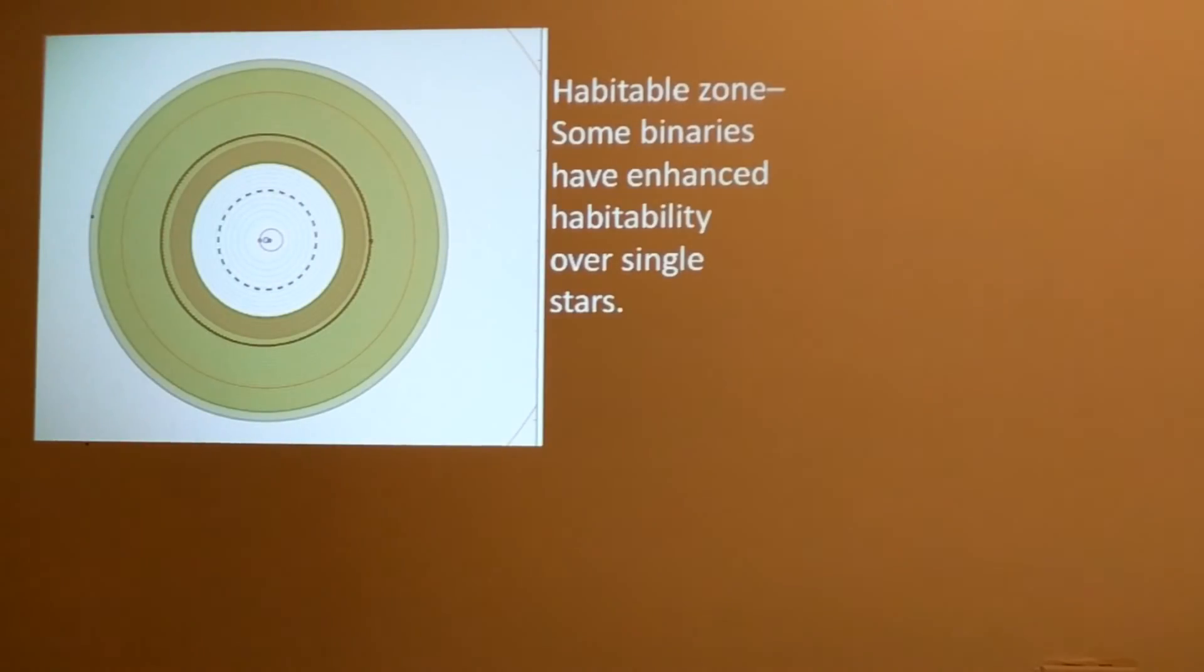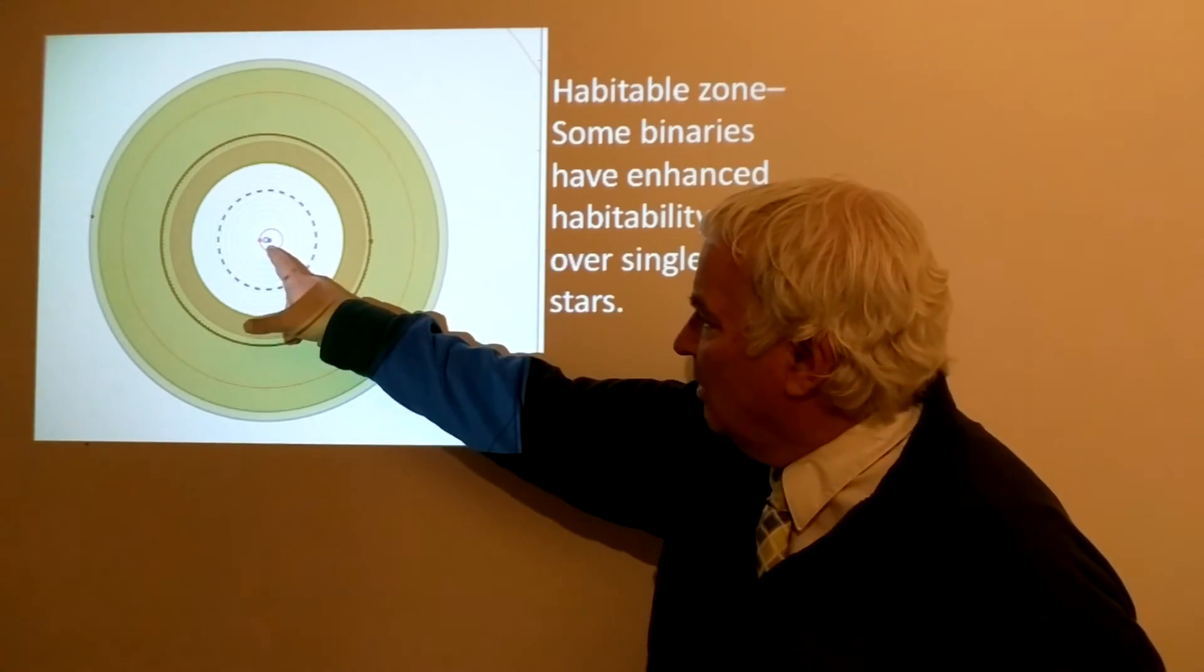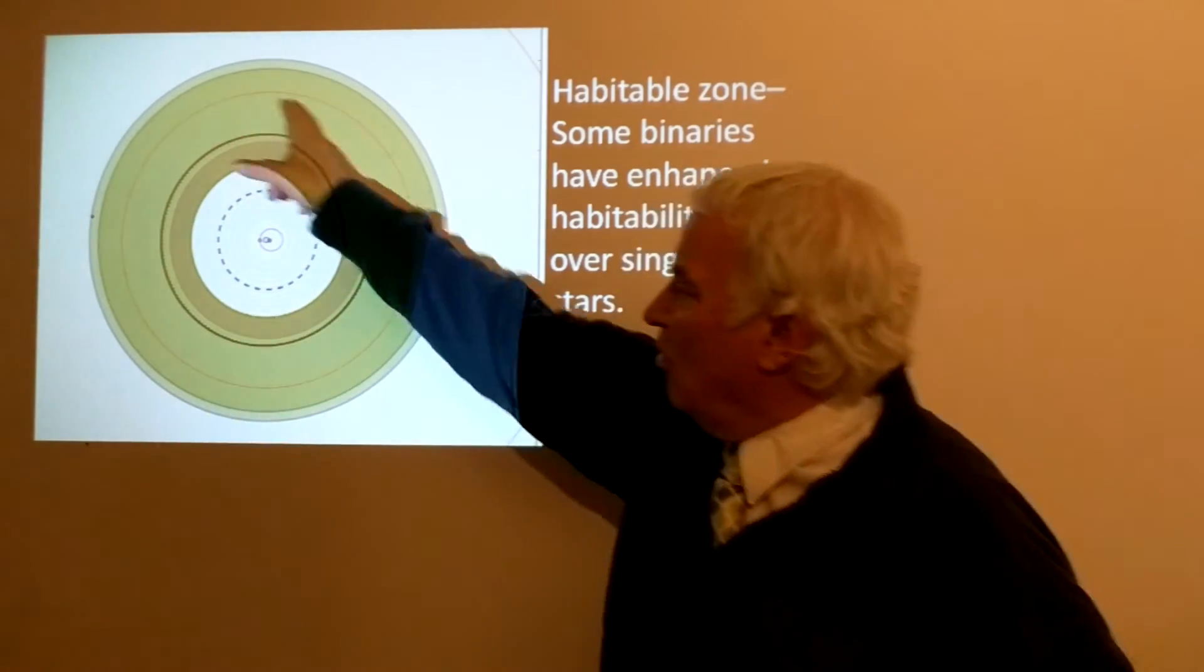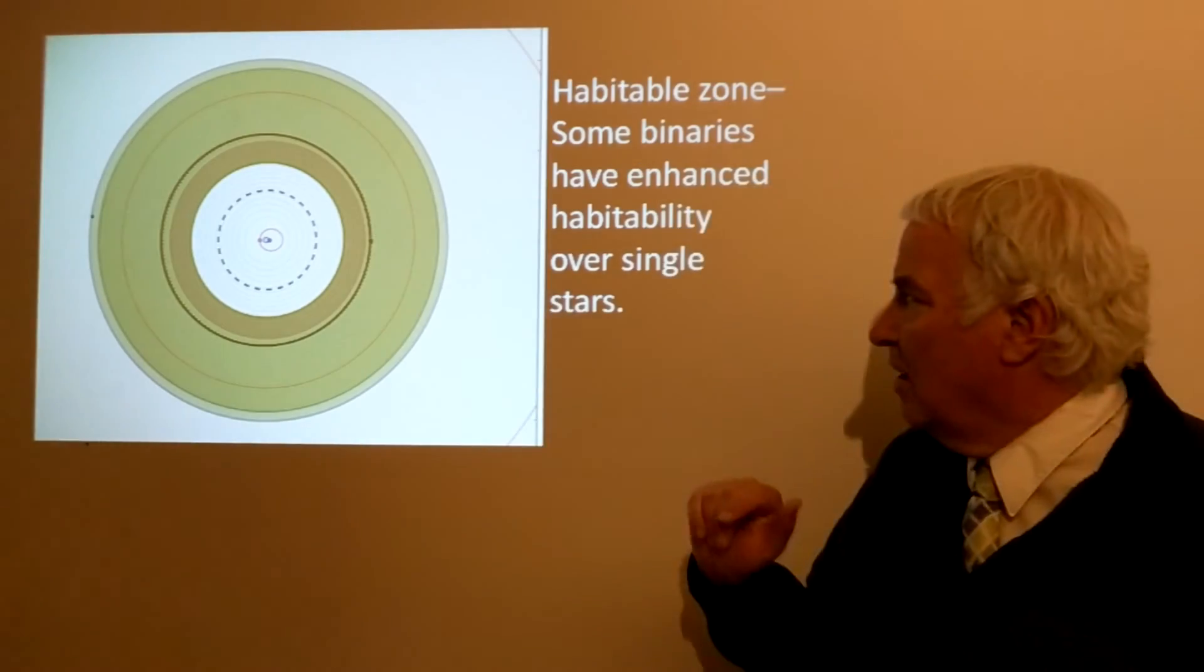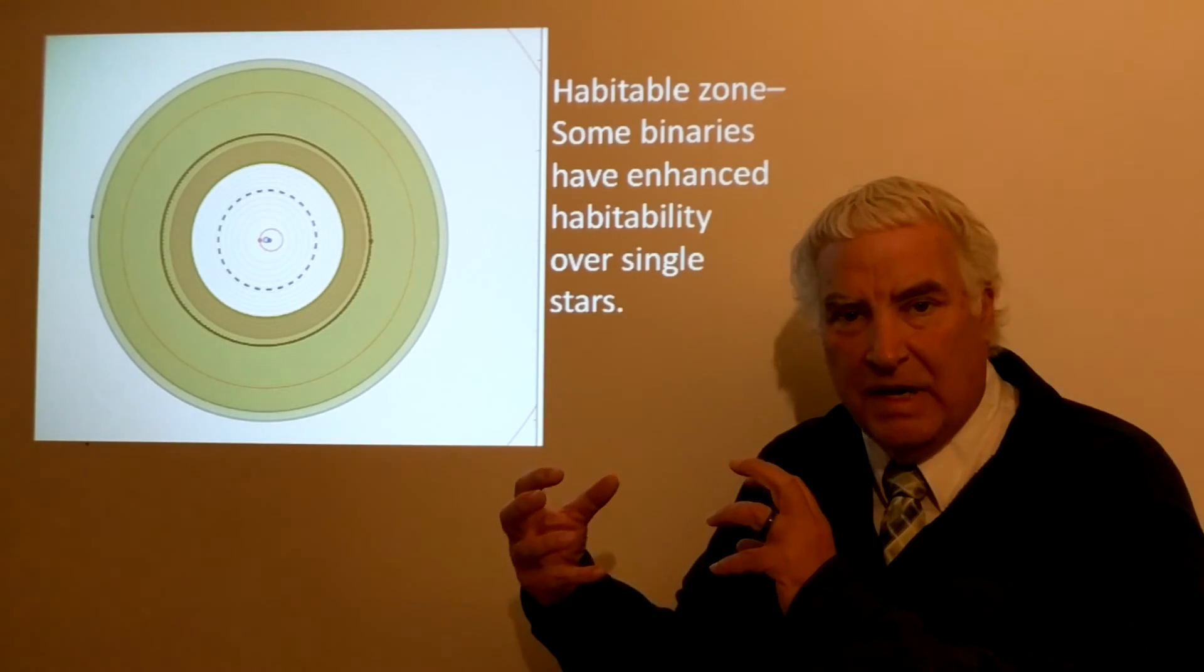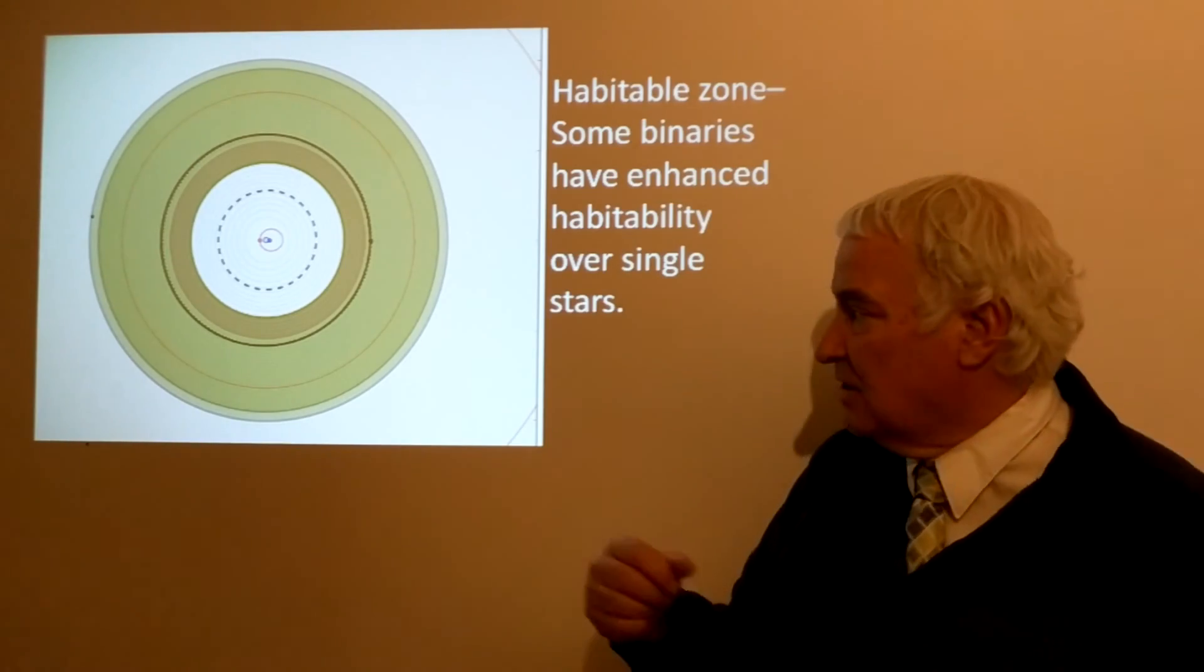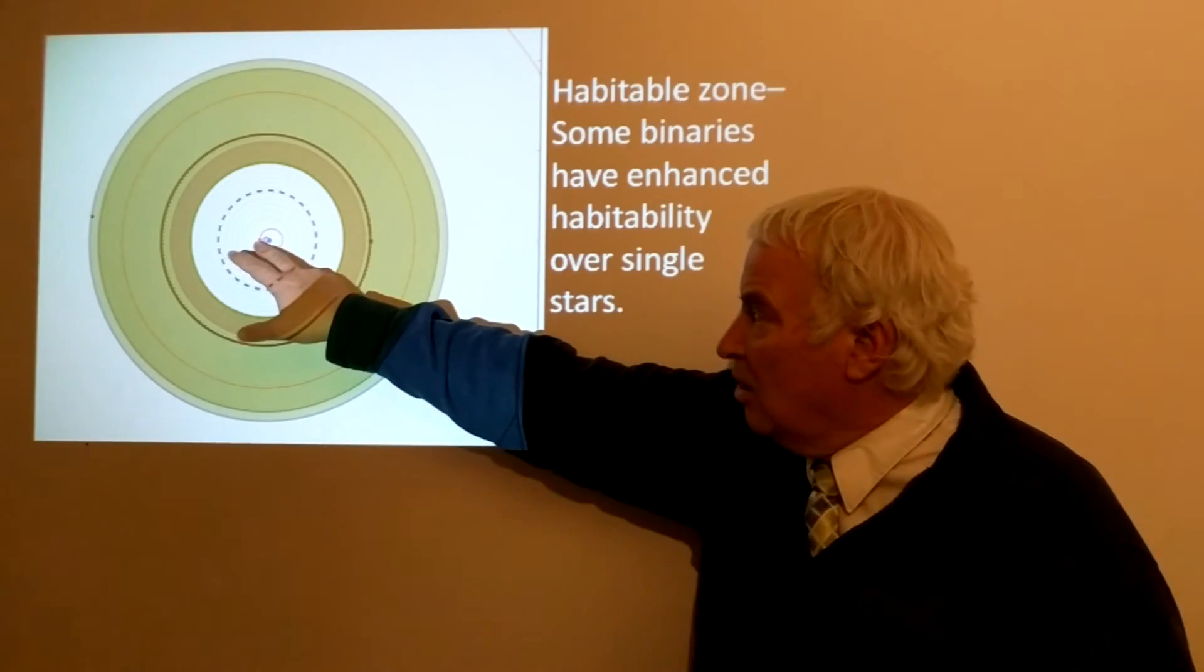What about binaries? Some binaries have enhanced habitability over single stars. This show depicts a binary - two stars very close together orbiting around, and planets orbiting outside the dotted line are on stable orbits. Here is an example planet orbiting out here. The green part is the habitable zone, so the planet is orbiting safely out there. An advantage of some binaries in this case is that the two stars are at such a distance with an orbital period, maybe about 20 or 30 days, and they tidally torque each other. Their tidal forces cause the rotation of the star to come into synchronous rotation, just like the same ones with the Earth and the Moon, except here we're talking about the tidal forces between two stars in a binary.